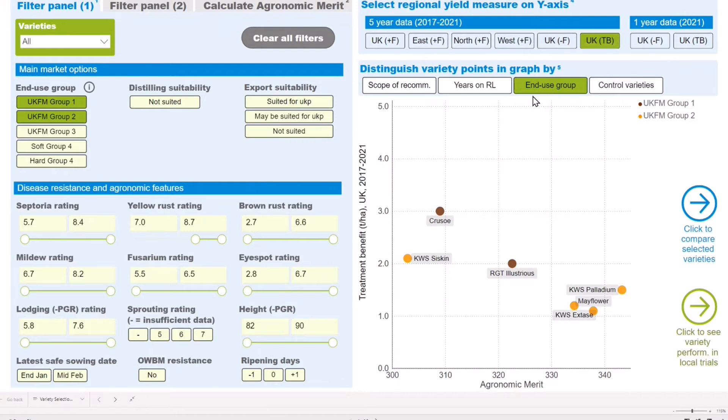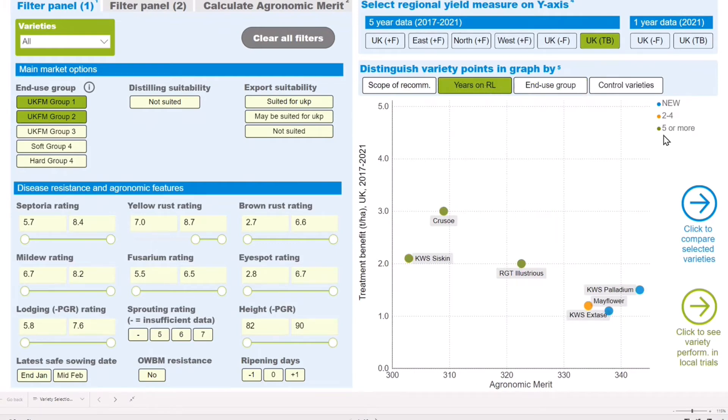The buttons directly above the chart let you toggle between alternative views such as end use group or the number of years a variety has been on the RL. The colored dots in the key to the right of the chart show what each view indicates.